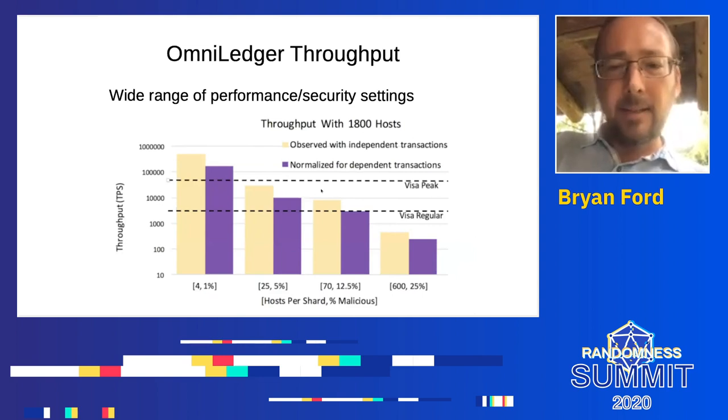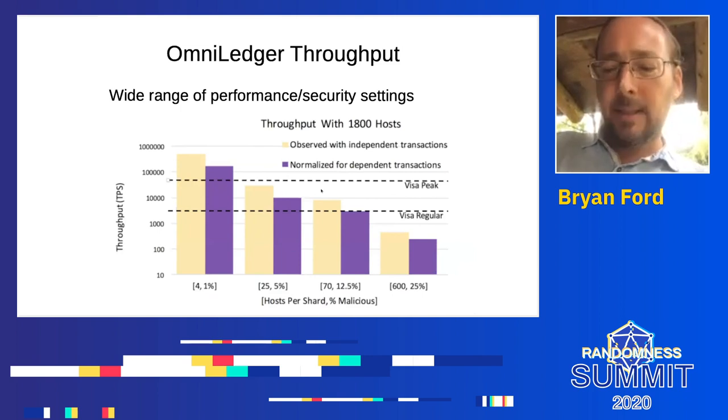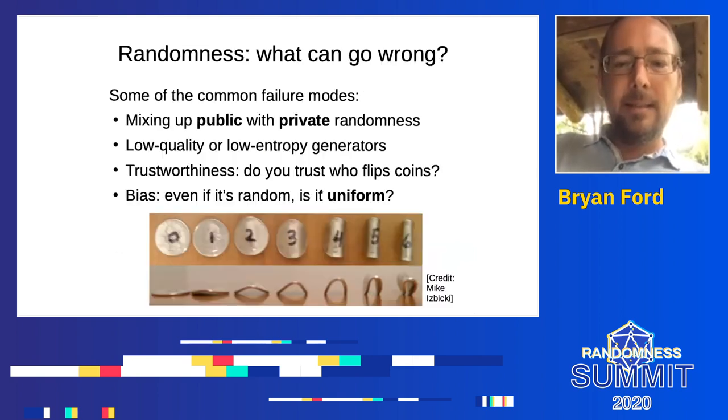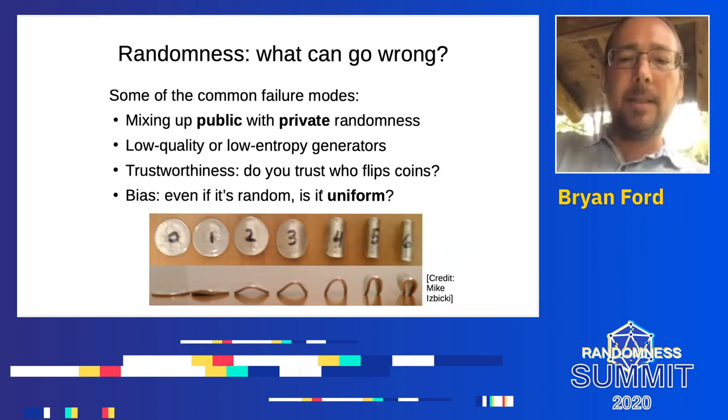One particular application from our lab is OmniLedger, one of the first horizontally scalable blockchain systems using sharding. OmniLedger divides the state of a blockchain into any number of shards by dividing the total population of validators into smaller but randomly chosen subgroups. It is critical from a security perspective that these subgroups be unbiasedly random, to ensure no attacker can compromise a majority of any single shard. This is just one of many applications of public randomness.